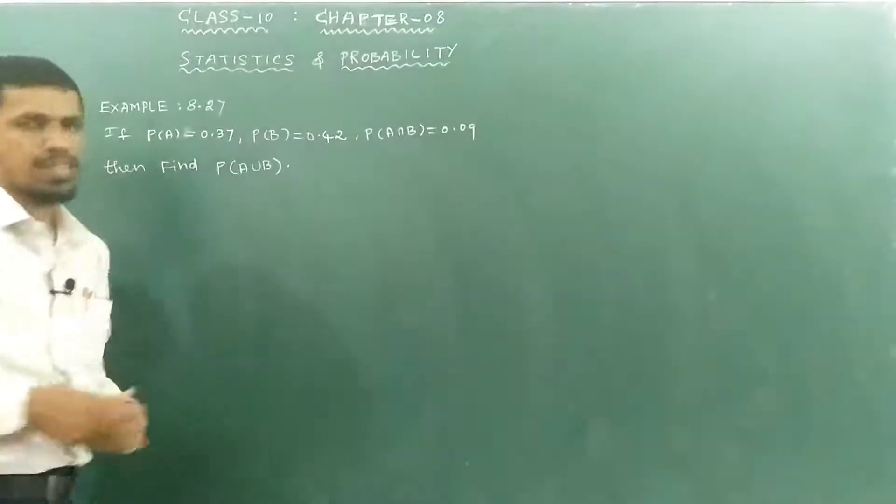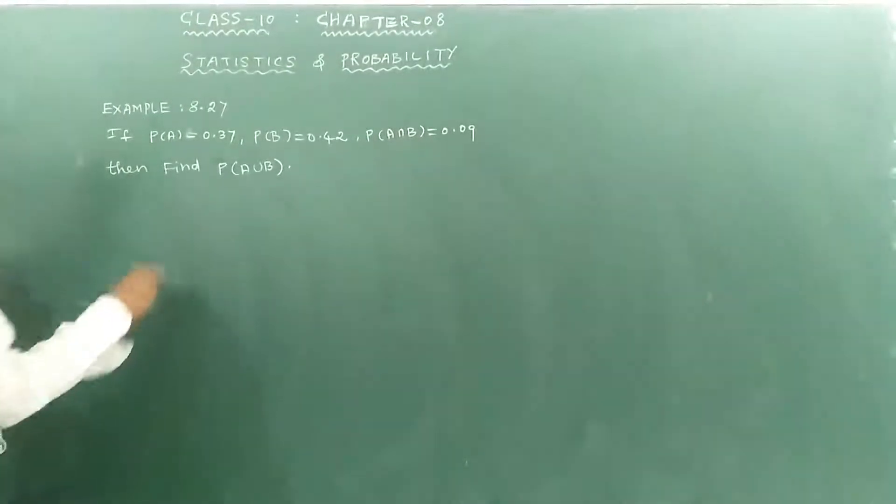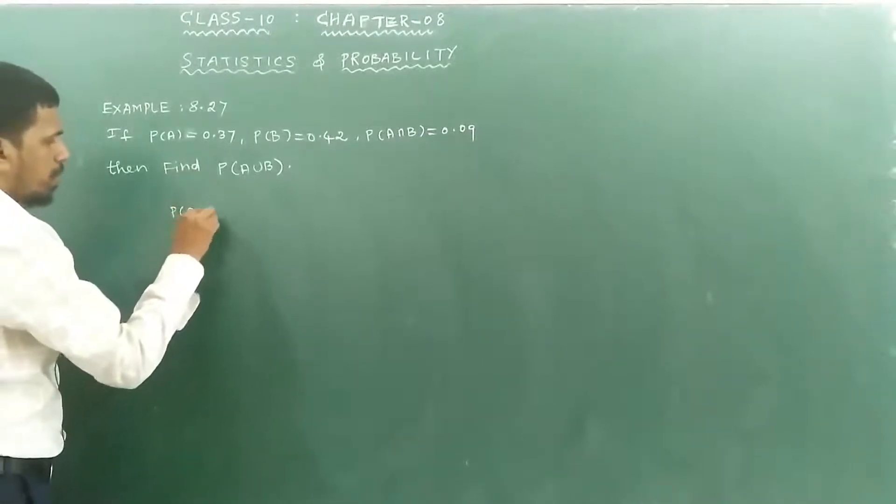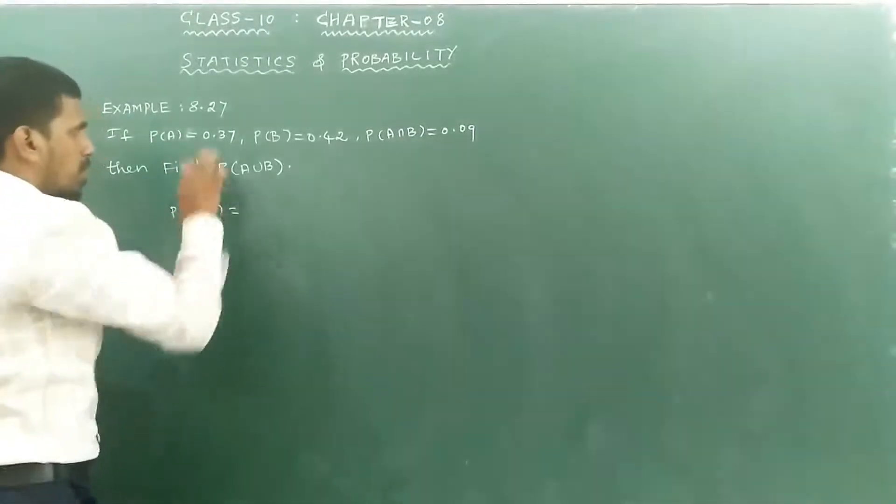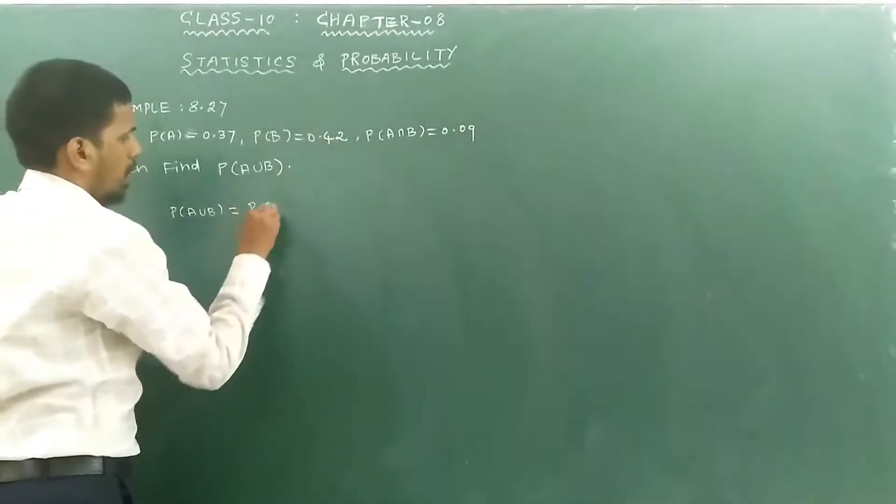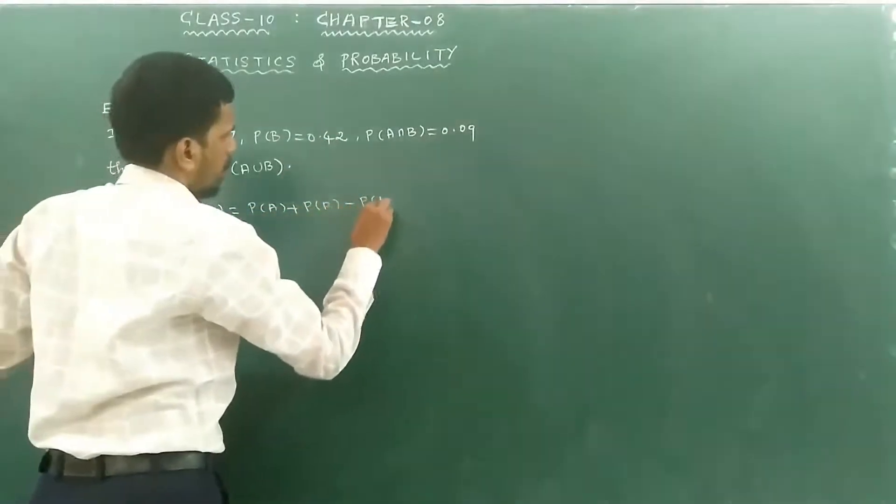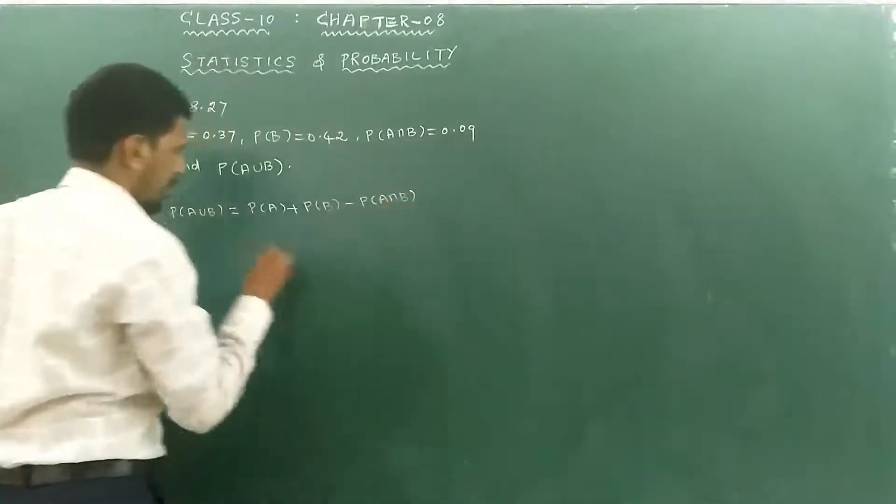We'll use the formula for this problem. The formula is: P(A union B) equals P(A) plus P(B) minus P(A intersection B).